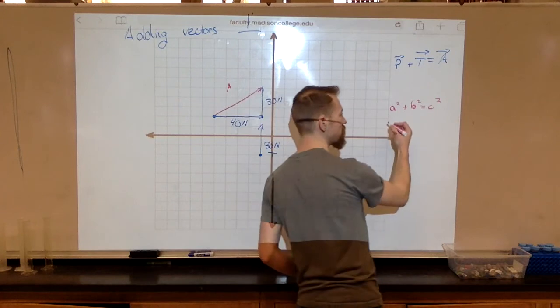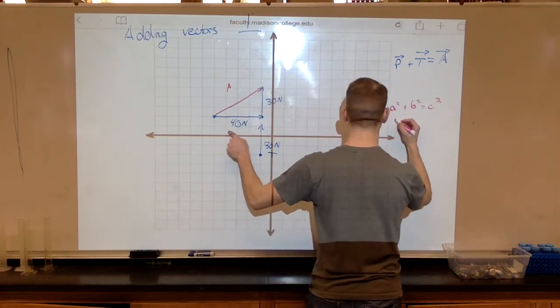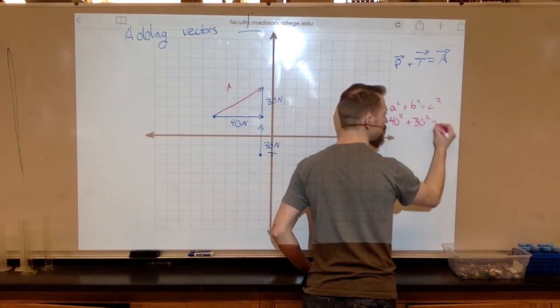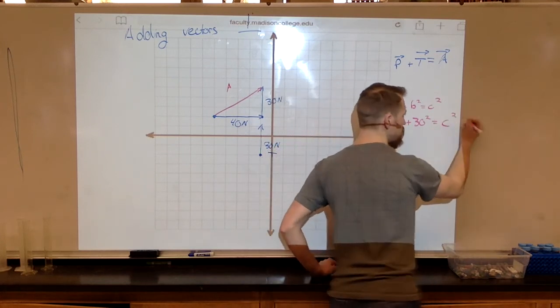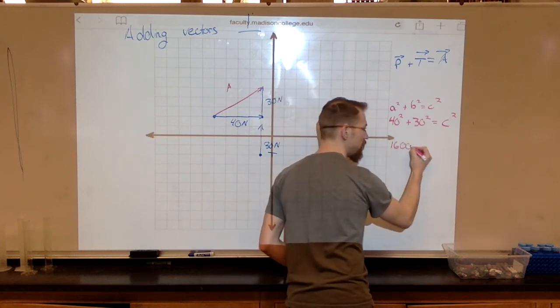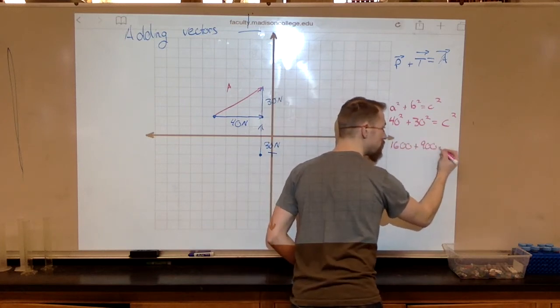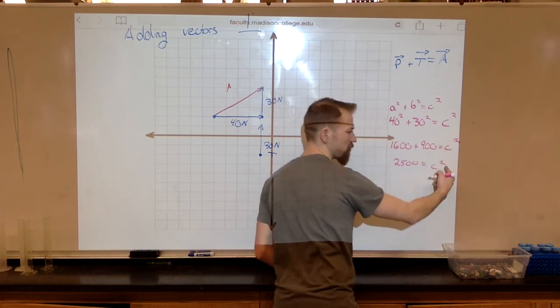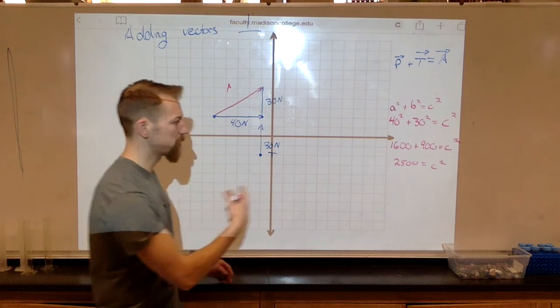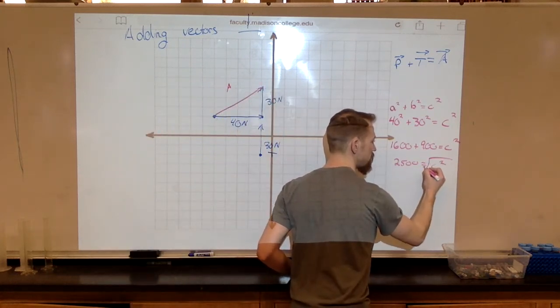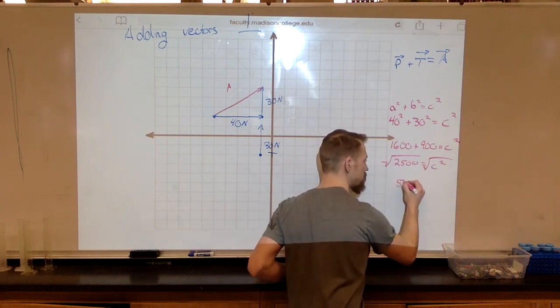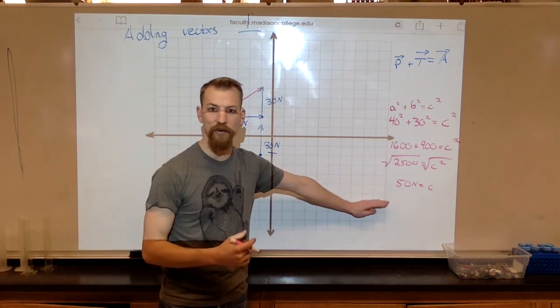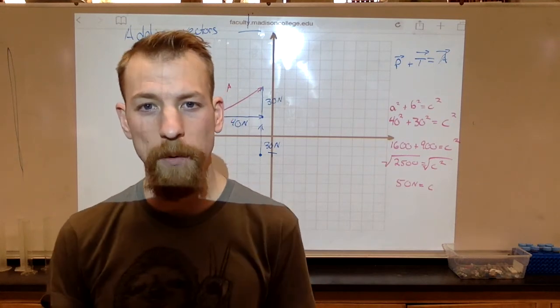And the reason why I changed this is so that these numbers would work out so easily. We'll use this vector here, 40 squared plus 30 squared equals something squared. 40 squared is 1600 plus 900 equals C squared. These two added together are 2500 equals C squared. Because we don't want C squared, we just want C, we're going to take the square root. Take the square root of both sides. This ends up as 50 newtons of force equals C.